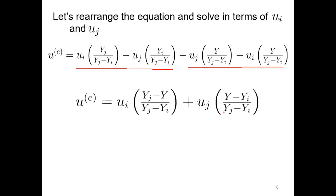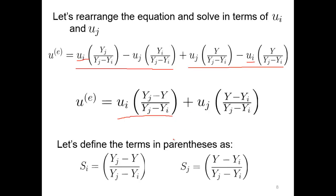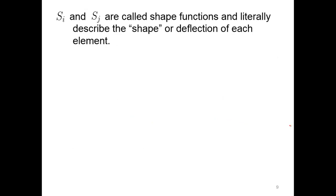We collect all the terms that have ui in them and all the terms with uj, and we define the terms in the parentheses. This term is Si, and this term is Sj — S sub j. These are very, very key things going forward. Si and Sj are called our shape functions. They literally describe the shape or the deflection of each element. We use these shape functions to figure out what the deflection is at any point between two nodes — hence the name shape functions.